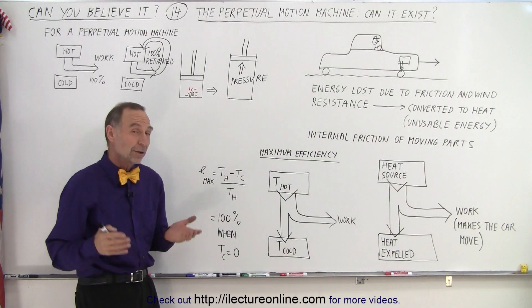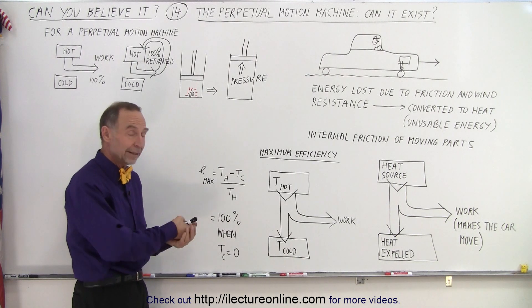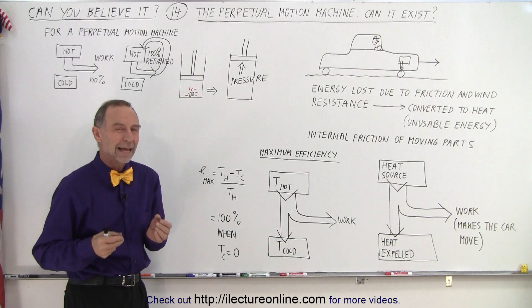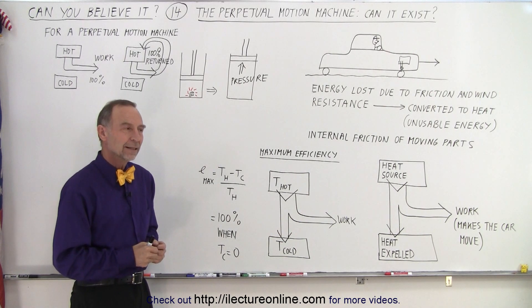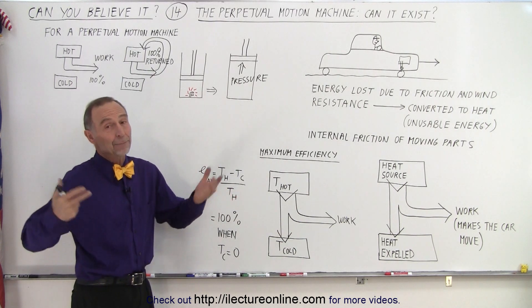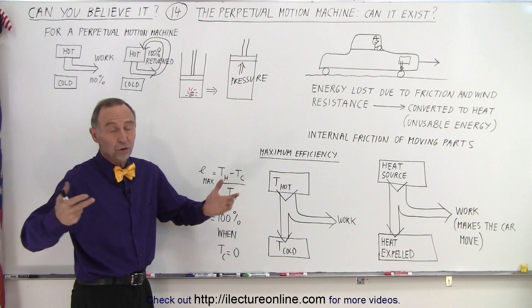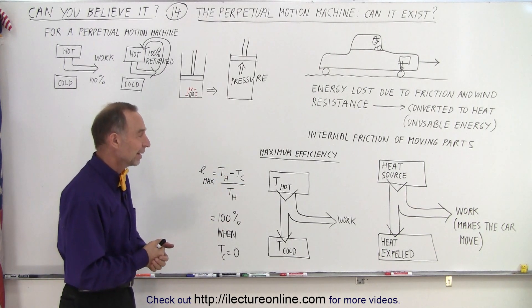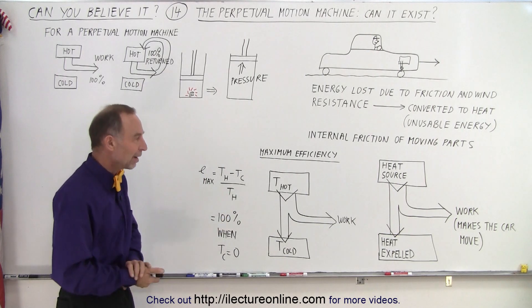So to make a car 100% efficient, we need the cold temperature, the air coming out of the tailpipe, to be at zero degrees Kelvin, absolute zero. And of course, we know that's impossible. At absolute zero, the air would be a solid. We'd have solid cubes of air coming out of the gas pipe, and so that obviously is not possible.